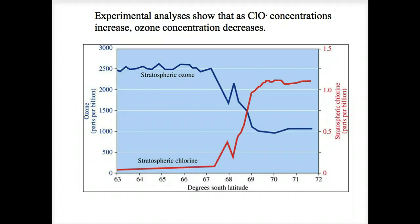This is the smoking gun. The relationship between increasing chlorine monoxide and decreasing ozone supports the hypothesis of chlorine as a catalyst.